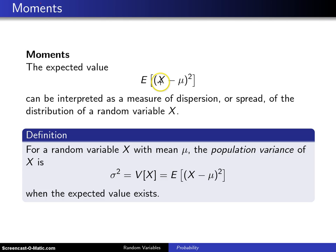It is the expected value of x minus mu, which is the population mean, squared. And it is a measure of dispersion or spread of the probability distribution of a random variable x.